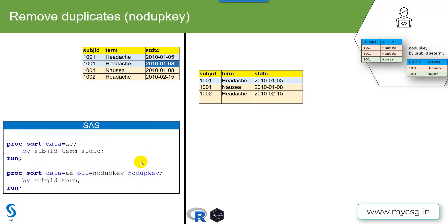Pre-sorting is mandatory when there is an additional requirement to keep the earliest instance, because if 8th January comes on top instead of 5th January, that record would be kept and 5th January would be dropped. So we pre-sort first, then use NODUPKEY to remove duplicates based on the values in a specific set of variables.